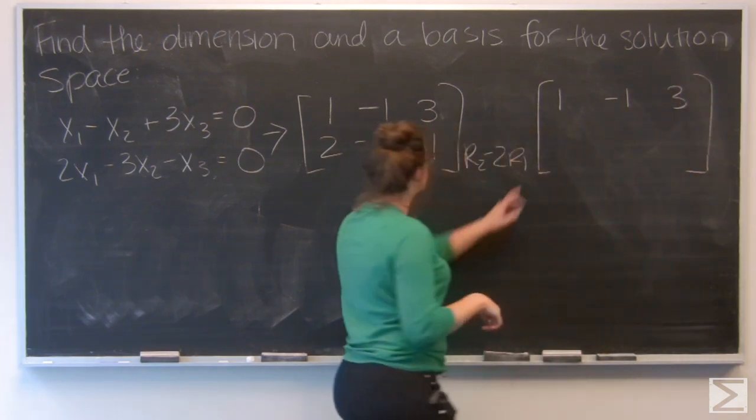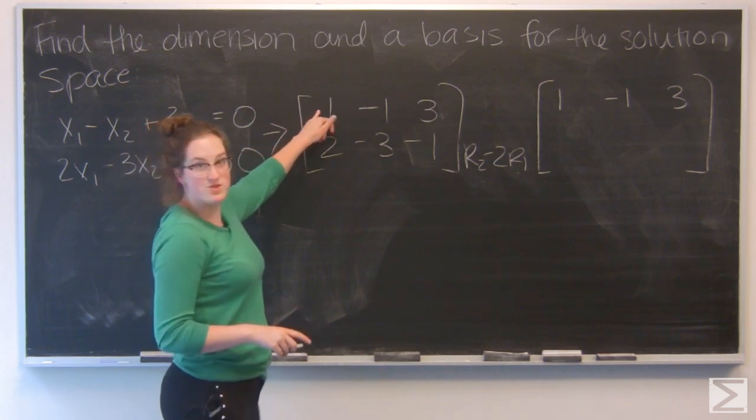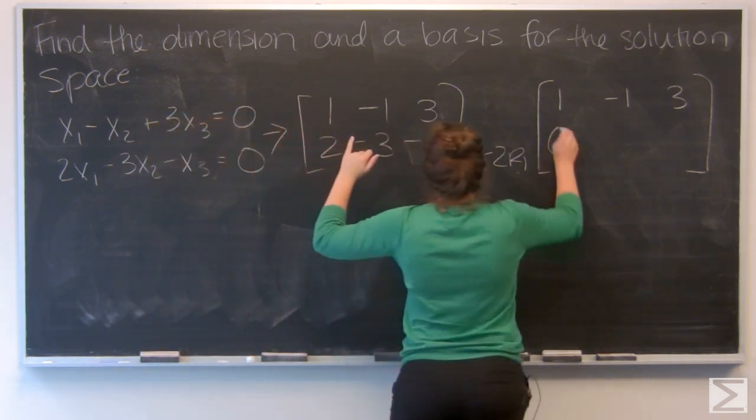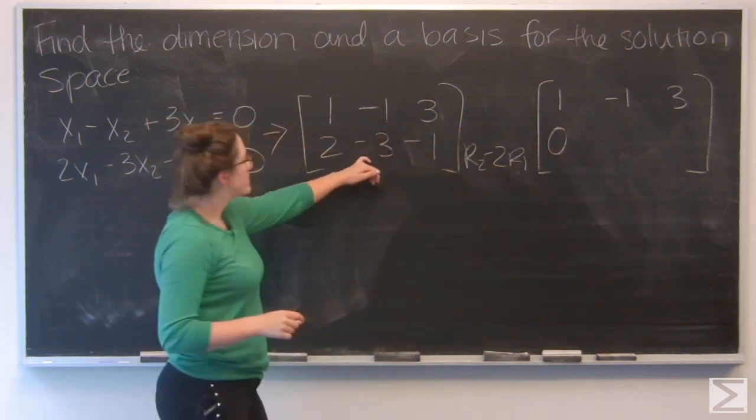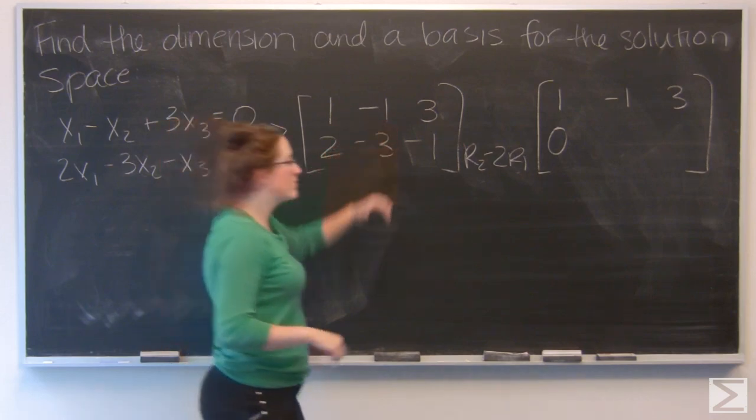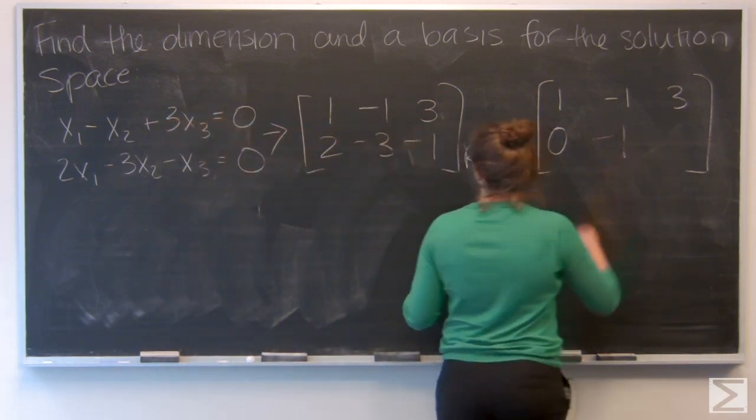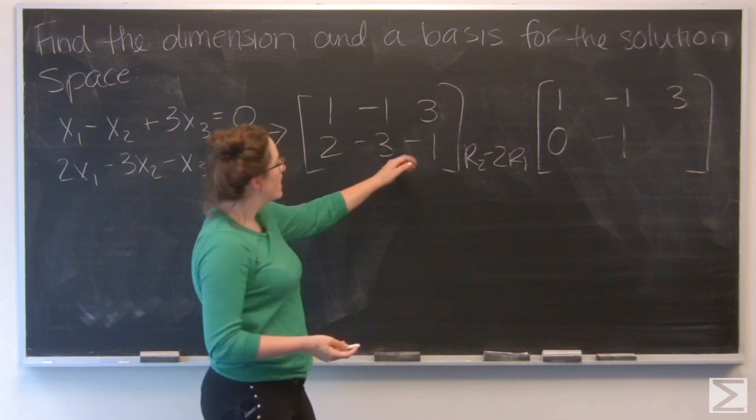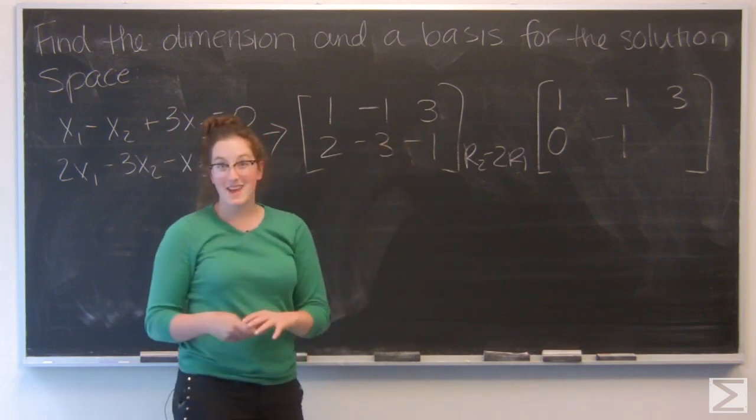For the first term here, I've got two minus two, which is zero. Second term, I have negative three plus two is negative one. For the third term, I have negative one minus six, negative seven.